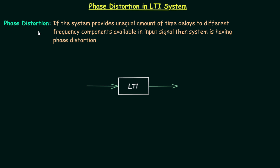First I will explain what phase distortion is and then I will give one example of phase distortion. The phase distortion will be there if the system provides unequal amount of time delays. In case of magnitude distortion there was unequal amount of amplification, but in this case there is unequal amount of time delays, and because of this reason sometimes we call phase distortion as delay distortion. So the phase distortion will be there if the system provides unequal amount of time delays to different frequency components available in the input signal.